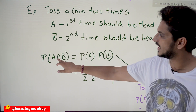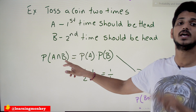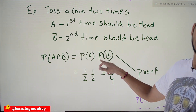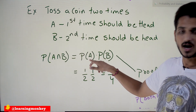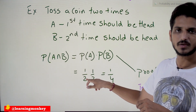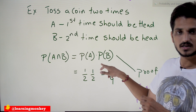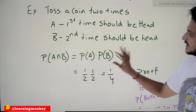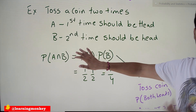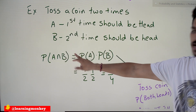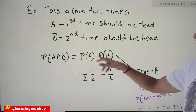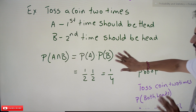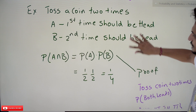For independent events, the probability of both events A and B occurring is given as: probability of A multiplied by probability of B. Probability of A — getting a head first time — is 1/2. Probability of B — getting a head second time — is 1/2. So 1/2 multiplied by 1/2 equals 1/4. This is the equation for independent events: P(A and B) = P(A) × P(B).